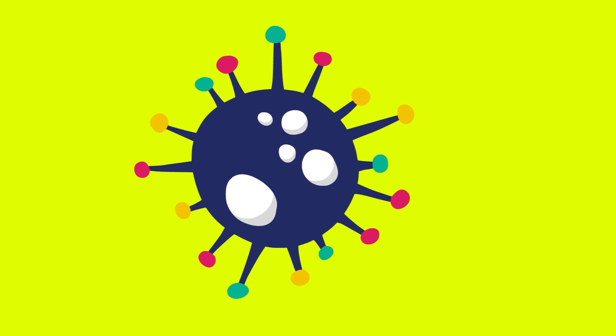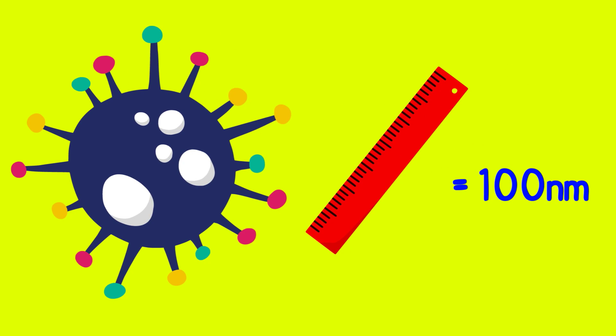This is a coronavirus, and each coronavirus has a diameter of 100 nanometers. To give you some idea about nanoscale, a single human hair is between 80 and 100,000 nanometers thick.